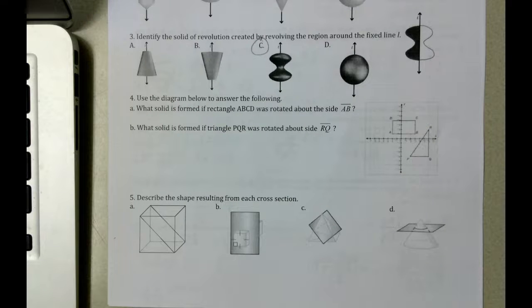Use the diagram below to answer the following. The diagram is actually off to the right here. And it says which solid is formed if rectangle ABCD was rotated about the side AB.